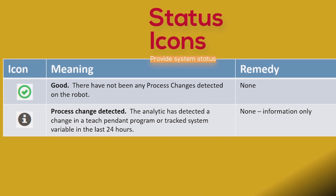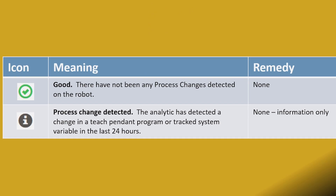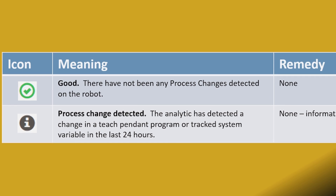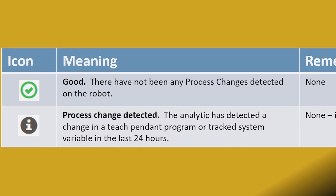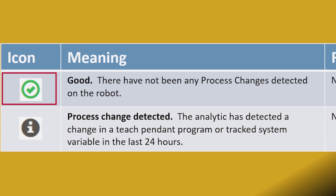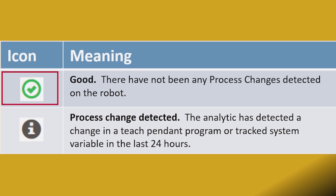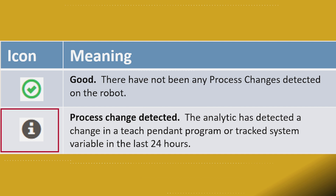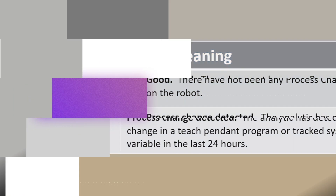Two status icons on the ZDT web portal dashboard let you know the status of your system. The Good icon indicates that no process changes have occurred within the last 24 hours. The Informational icon indicates that a change has occurred and will remain for 24 hours. If no further changes occur in the next 24 hours, the Informational icon will be replaced by the Good icon.